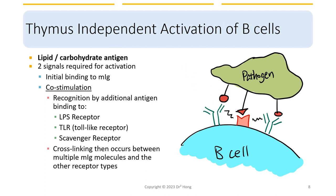Now we're looking at thymus-independent activation of B cells. In this case, there is no MHC class 2 molecule involved. So in this independent pathway, we are going to be able to recognize different antigens, including lipids and carbohydrate antigens. For these things to happen, there are two signals required for activation. A pathogen has lipid and carbohydrate moieties on its surface.